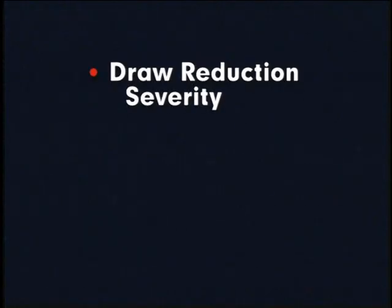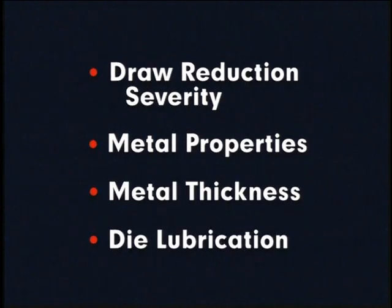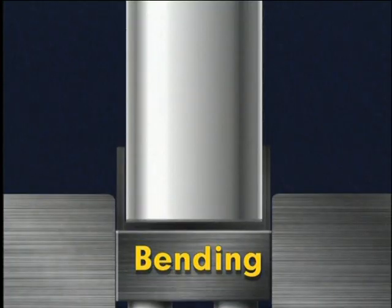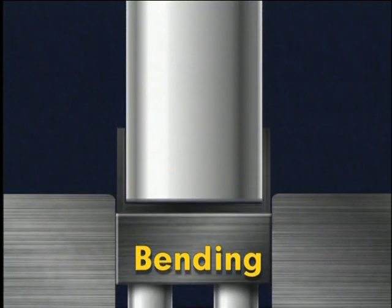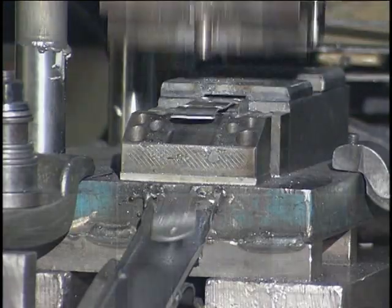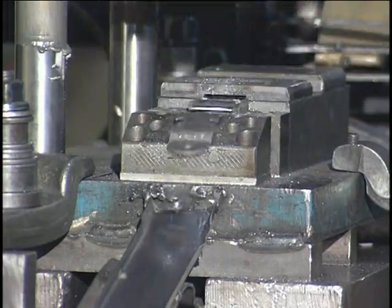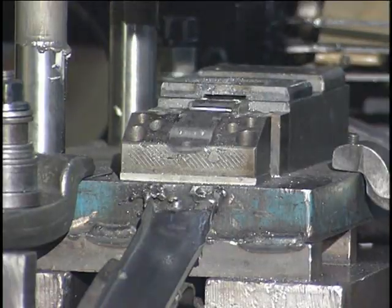Factors determining necessary blank holder pressure vary from part to part, but include the severity of the draw reduction, metal properties and thickness, die lubrication, and other factors. Bending is performed on sheet metal to gain rigidity and to produce a part of desired shape. Bending is usually done to make structural stampings such as brackets, braces, and supports.